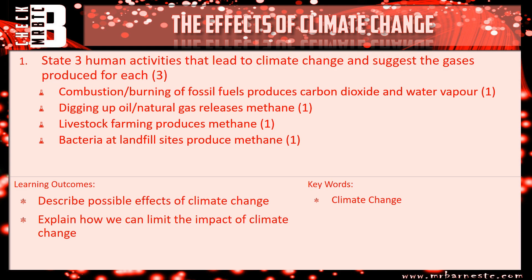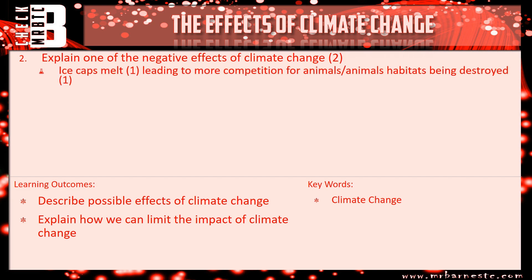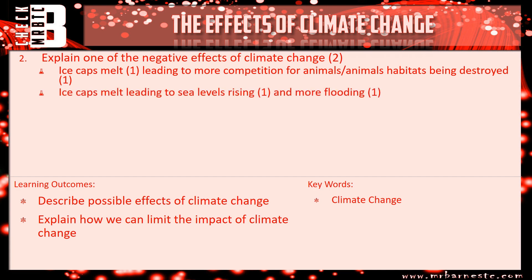Question two: explain one of the negative effects of climate change. Starting with ice caps melting — if the ice caps melt, it leads to more competition for animals or their habitats being destroyed; either gets you the second mark. You must link the negative effect to the explanation to get your two marks. For example, if you put ice caps melting and sea levels rising, that's not two marks because you haven't given your explanation. Ice caps melting → sea level rising → more flooding: that's your explanation.